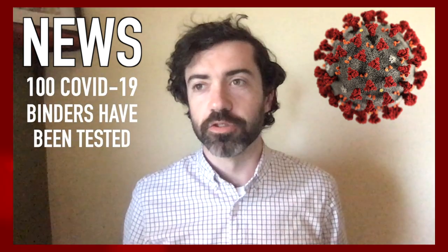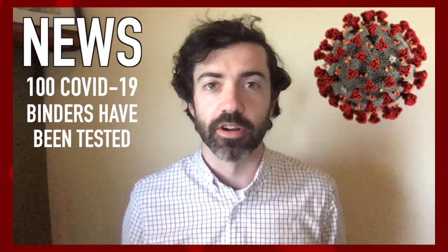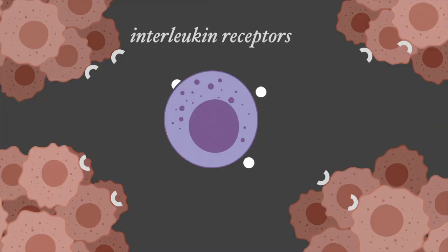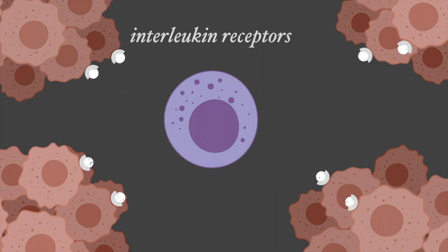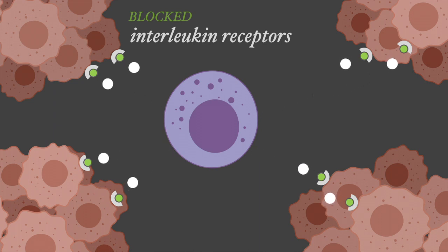We got some experimental results back. In this experiment, we produced a hundred Foldit design proteins from our coronavirus anti-inflammatory puzzles. These are proteins that are designed to bind what is called the interleukin receptor. We think that binding to this receptor could be an effective way to treat the cytokine storm that comes with advanced COVID-19 cases.